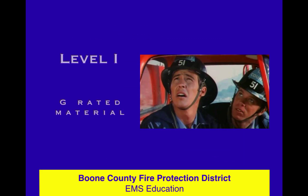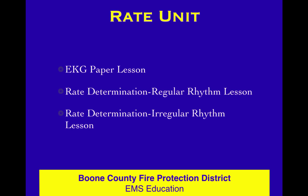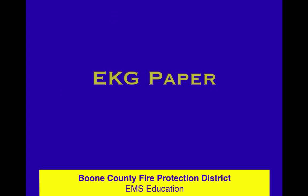We continue in the ECG course, Level 1 — G-rated stuff for all audiences — and the units in this course are shown here. We've done the fundamentals unit, and we're getting ready to do the rate unit. This is a pretty quick unit with three pretty quick lessons: one on EKG paper, which we're doing right now, then how to determine the rate in a regular rhythm, and how to determine the rate in an irregular rhythm.